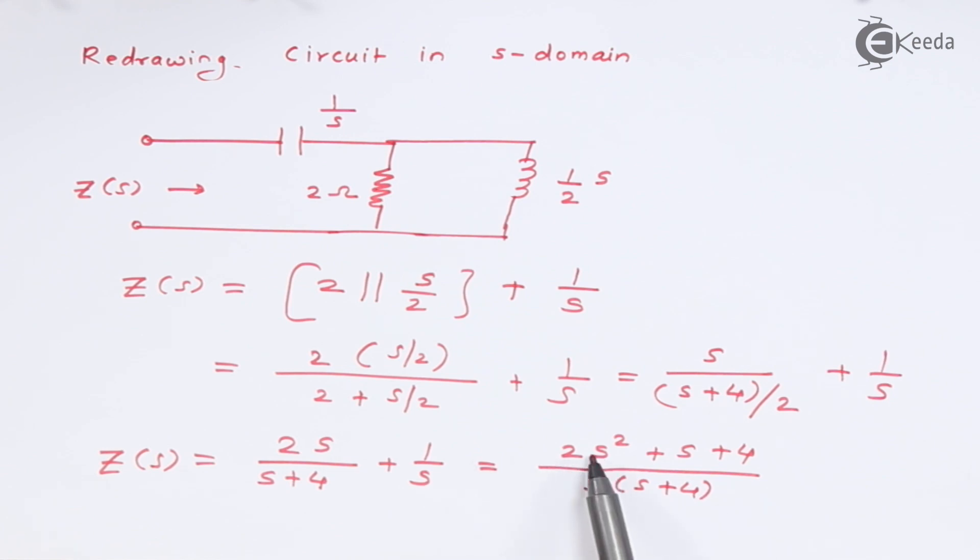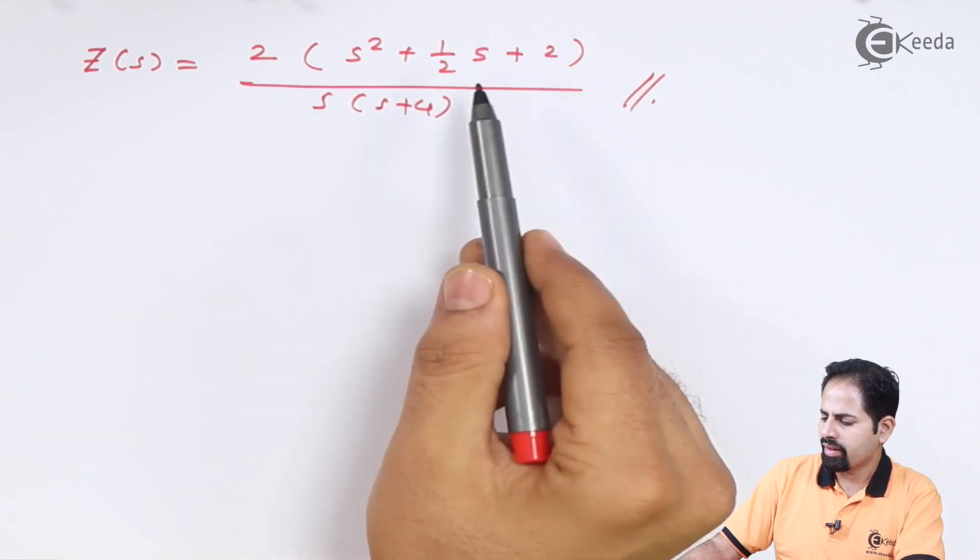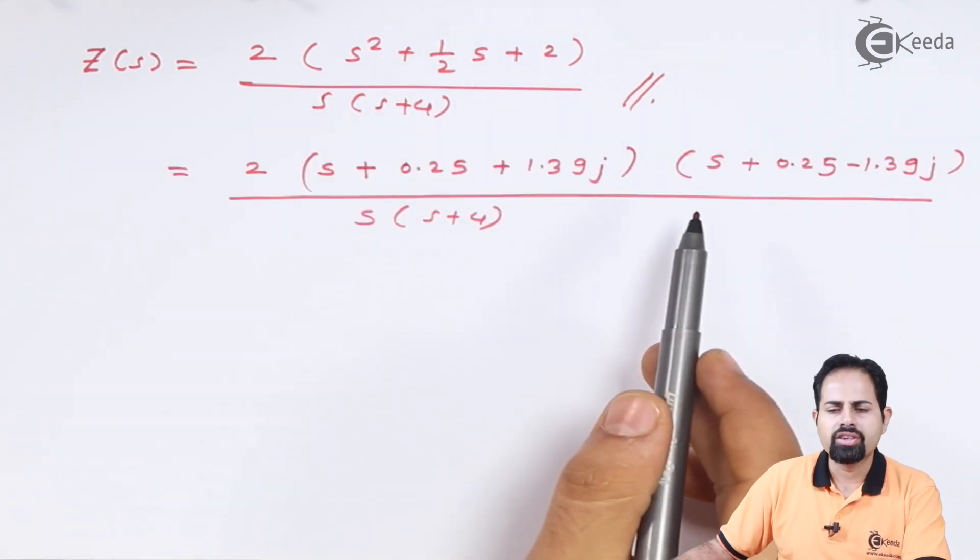We'll take 2 common because we want to make the coefficient of s², which is the highest order of the numerator, as one. So we have got this impedance function. Now we have to factorize this by taking the roots of the numerator.